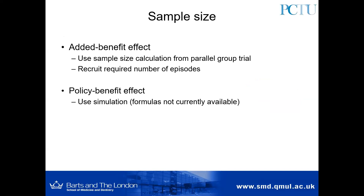For sample size, the calculation for the added benefit effect is very easy — we can use the same sample size calculation as for a parallel group trial, and instead of recruiting the required number of individual patients, we recruit that many episodes. For example, if a parallel group sample size calculation says we need 200 patients, we could use a re-randomization trial and recruit 200 episodes instead. For the policy benefit effect, there are currently no sample size formulas available, although we can still get sample size estimates using computer simulation.